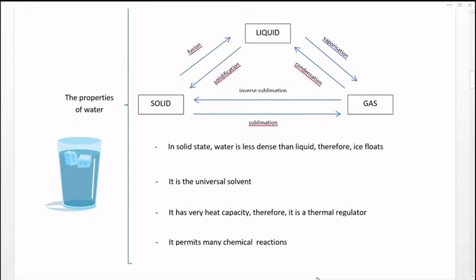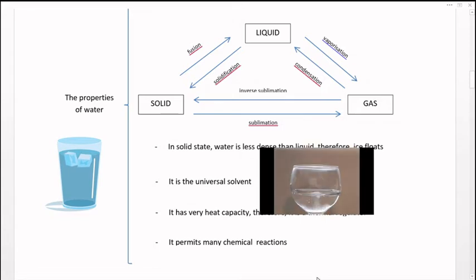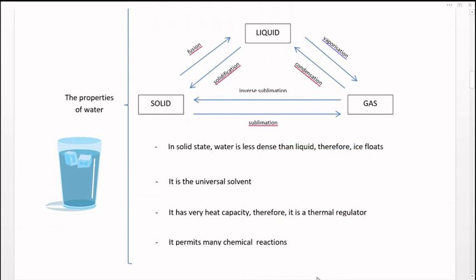Another very important characteristic is that it is the universal solvent. En el agua podemos disolver una enorme cantidad de sustancias, por ejemplo, como veis ahí en esa imagen, la sal. It has very high heat capacity so that it is a very important thermal regulator. El agua le cuesta mucho trabajo calentarse, pero también le cuesta mucho trabajo enfriarse. Por lo tanto, es un regulador térmico extraordinario.